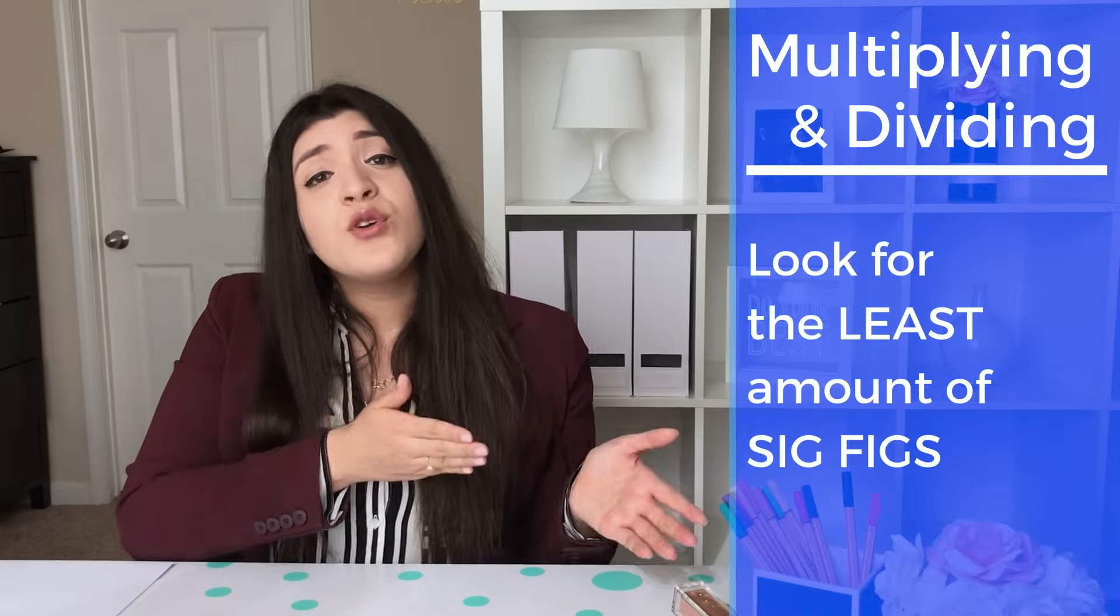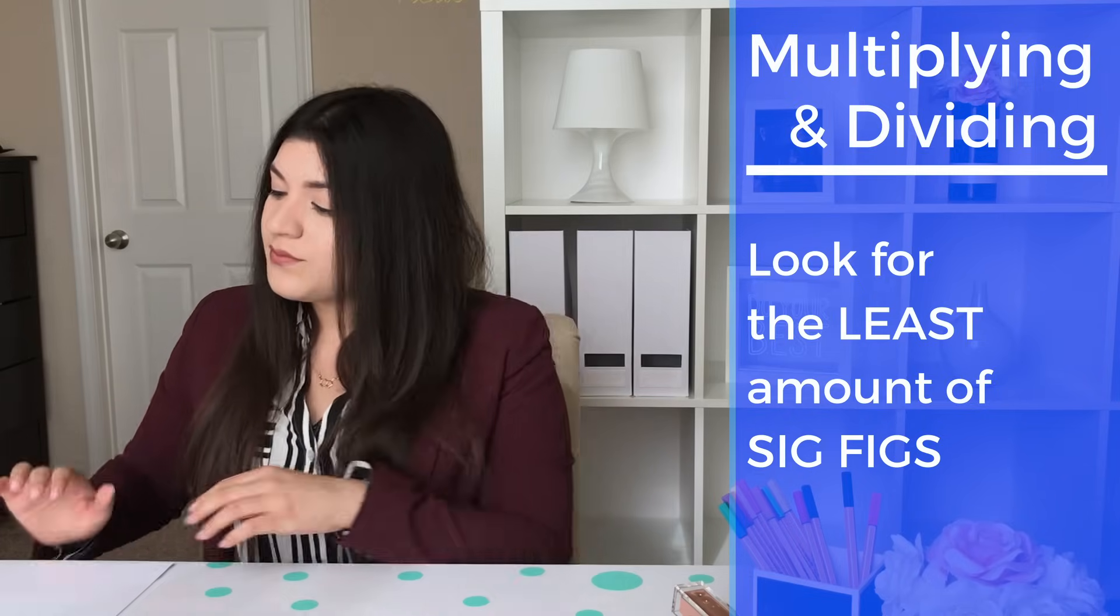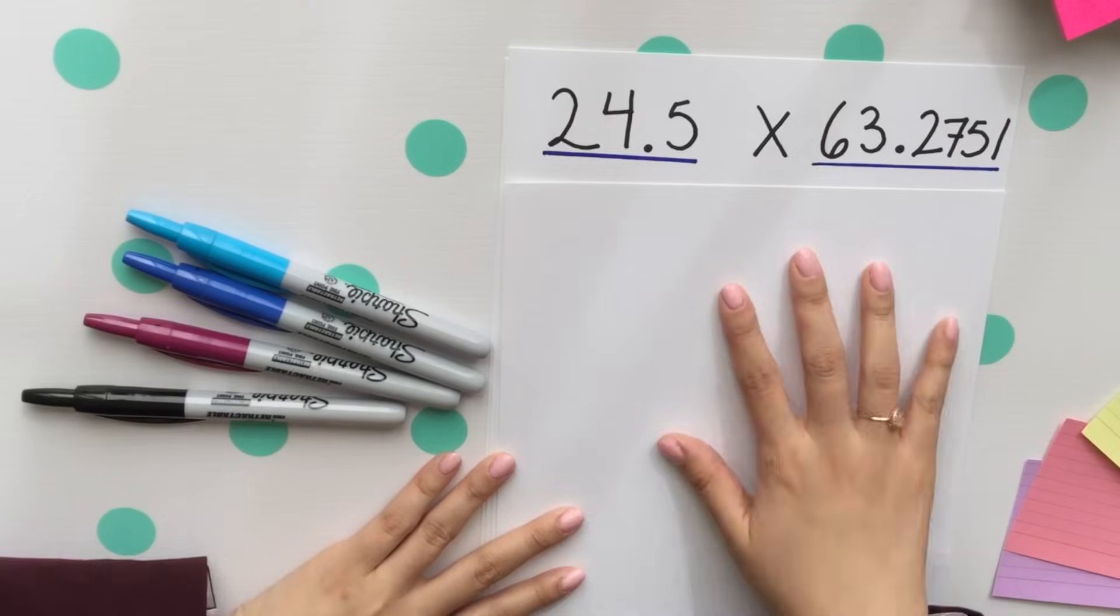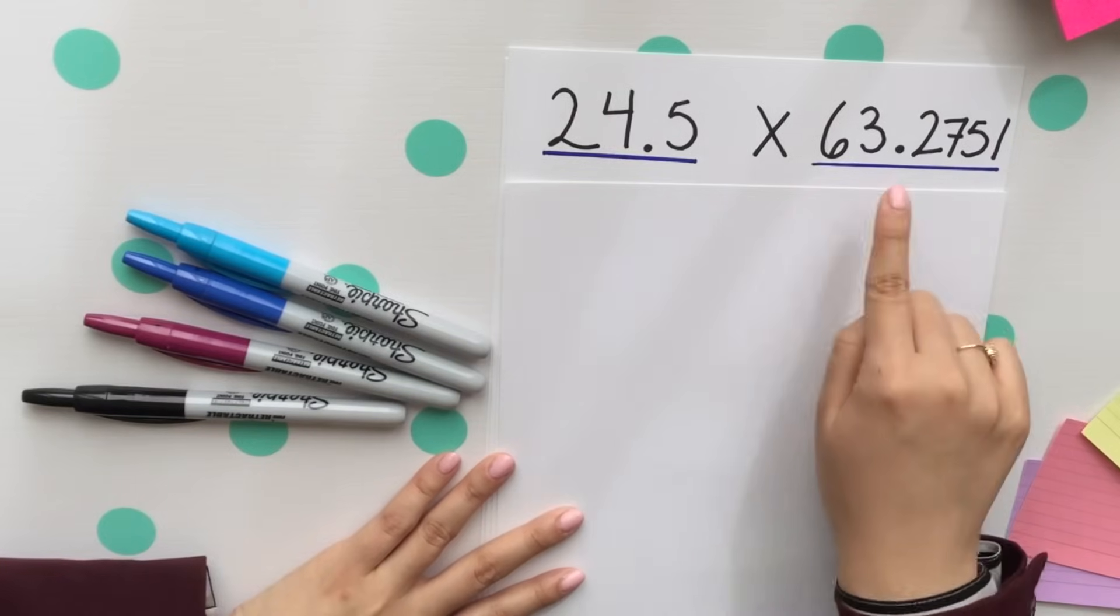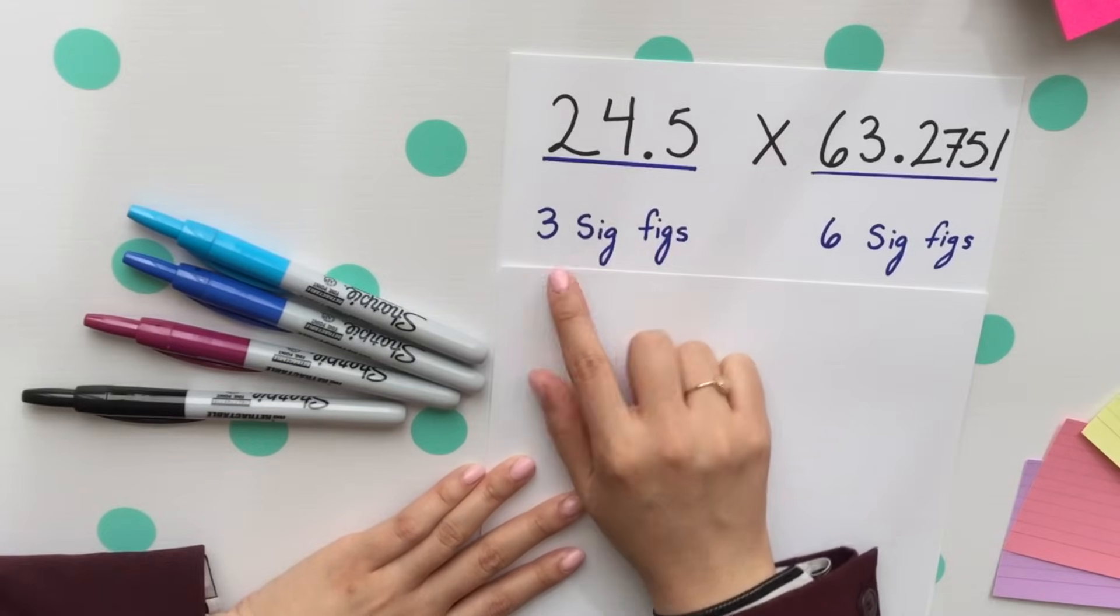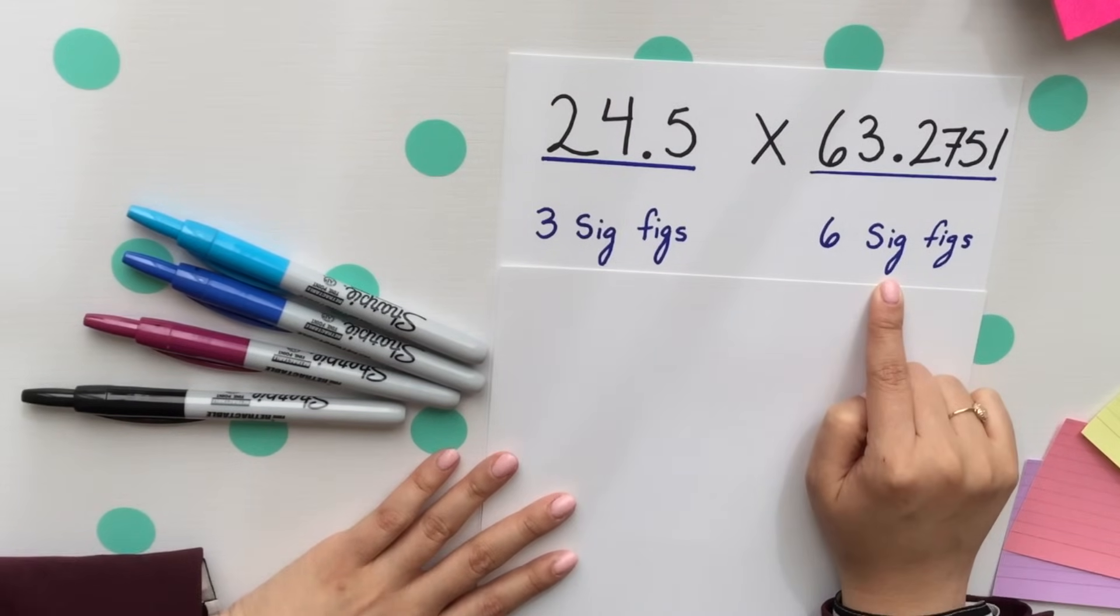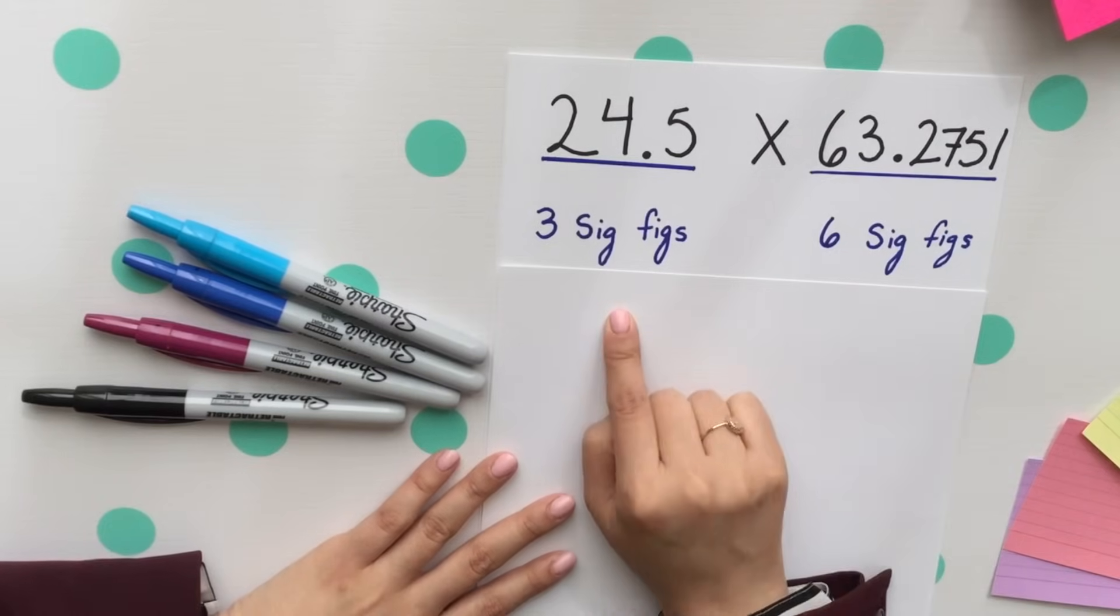Moving on to multiplication and division. When multiplying and dividing, you look for the least amount of sig figs. Your first step is to figure out how many sig figs there are within each number. Notice that there are three sig figs in this first number and six sig figs in the second. So we will round to three sig figs.